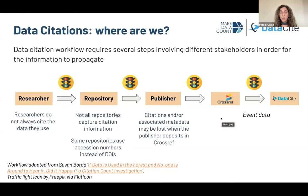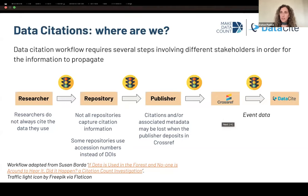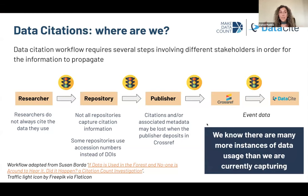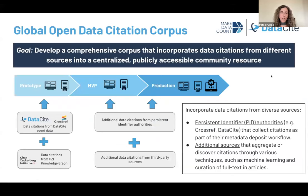Not all repositories capture citation information, and some repositories use accession numbers instead of DOIs, which means we are not collecting that metadata for reuse. At the publisher stage, there have also been challenges in getting journals to optimize their processes to allow data citation metadata to make it all the way to Crossref and eventually be aggregated through DataCite in their event data service. We know that there are many instances of datasets being used and cited but the system is not optimized at the moment to capture all of that information.